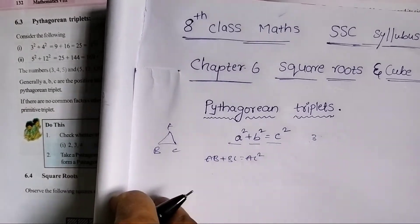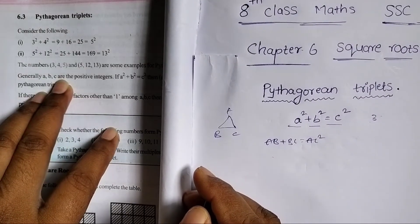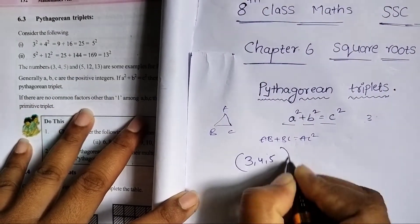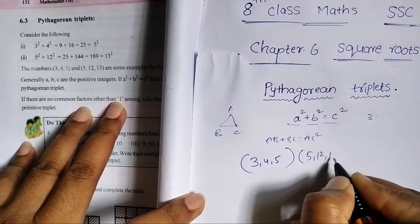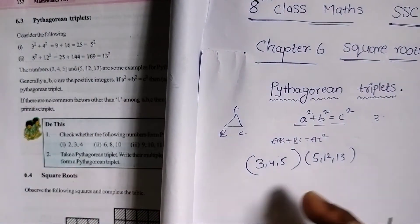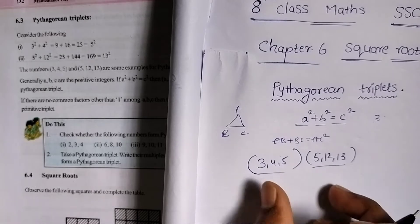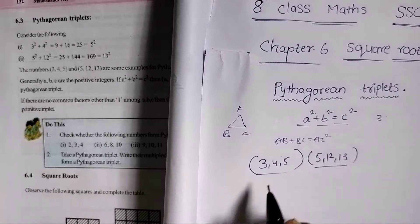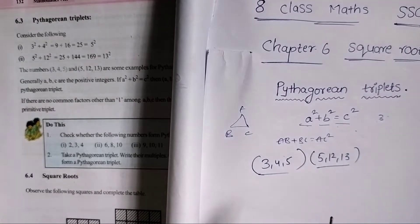For example, three numbers: 3, 4, 5. And 5, 12, 13. If you satisfy this condition, the three numbers will be Pythagorean triplets.